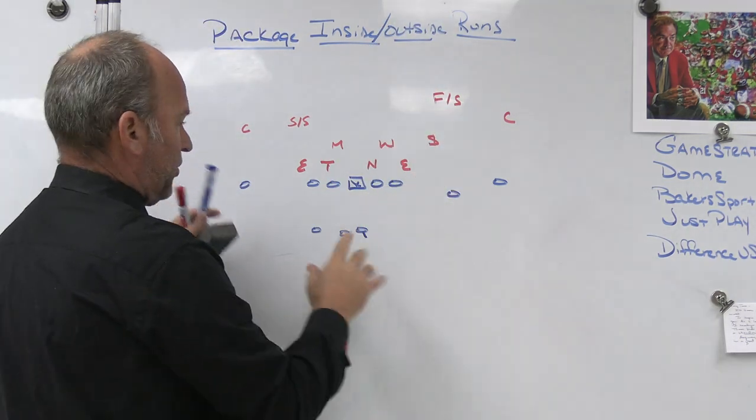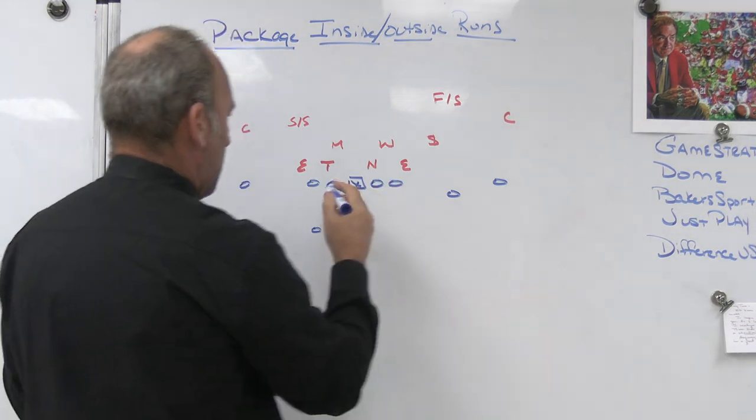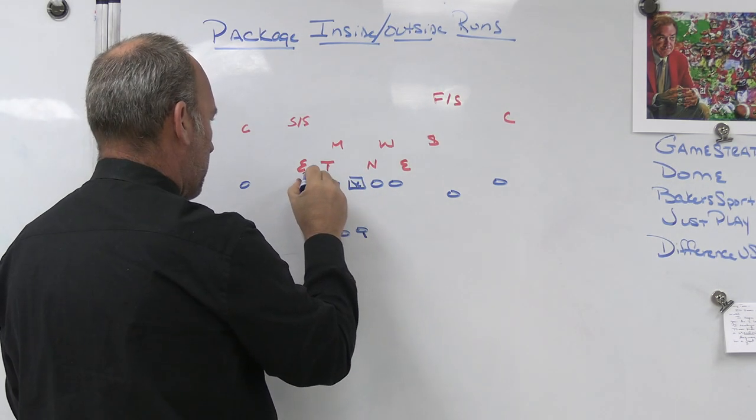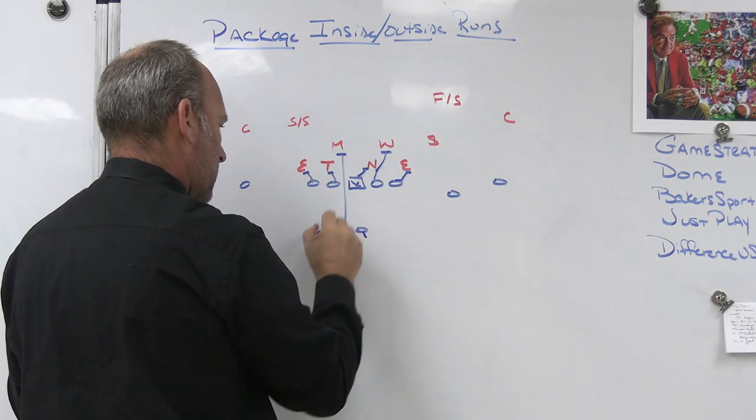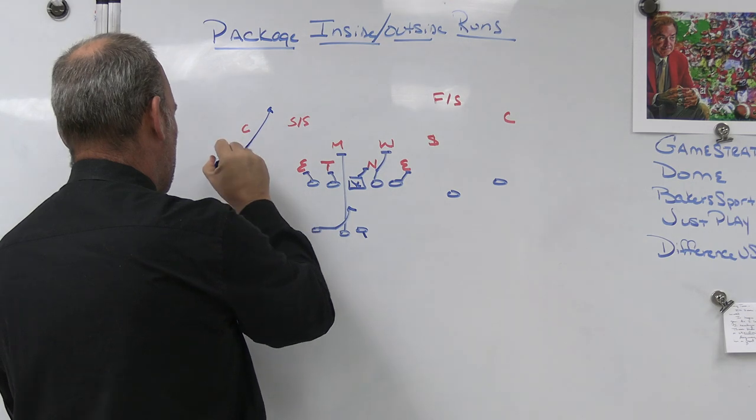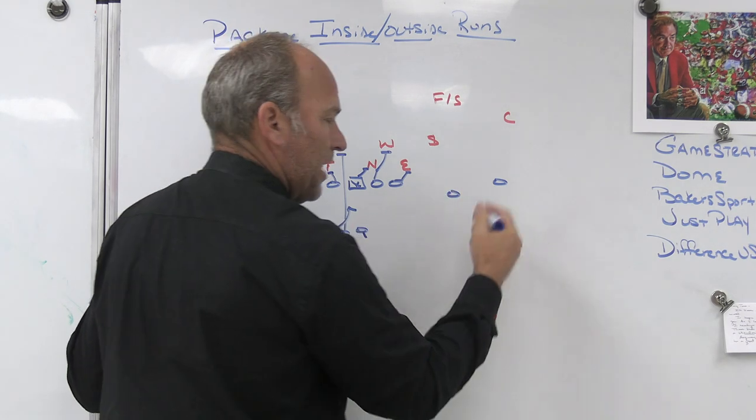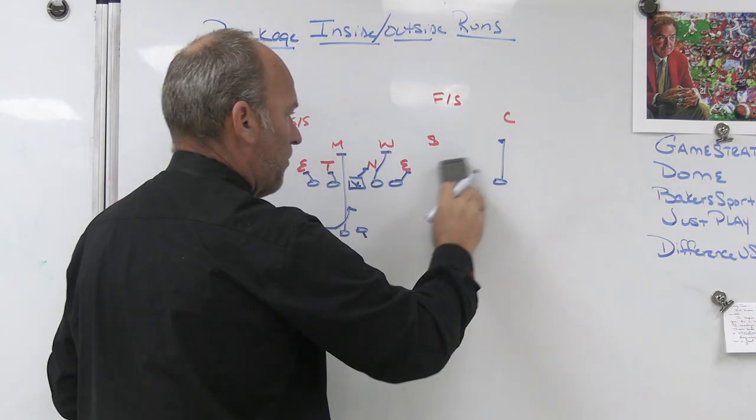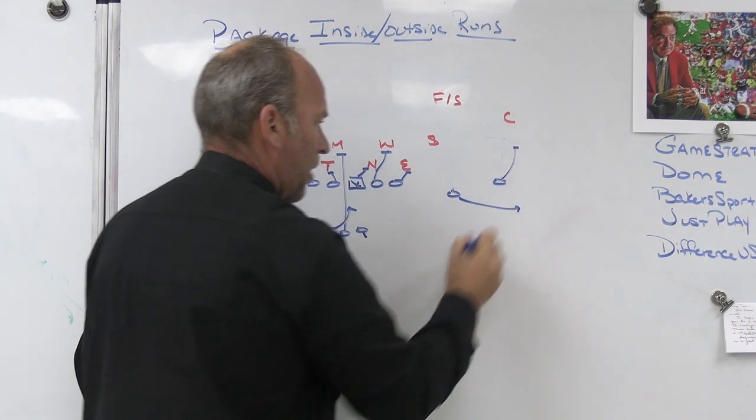So what we're going to look at today is pairing inside and outside runs. So with this 20 personnel set, with both backs to the weak side, what I would do is I would pair my RPO game to the single. So I would pair my lock isolation game, so I would pair that lock isolation scheme with one of my RPO routes to the single.